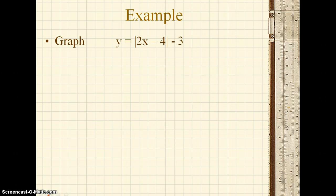When graphing these forms of absolute value, the first thing that you need to do is to find the vertex. The formula for the vertex is negative b divided by m comma c.